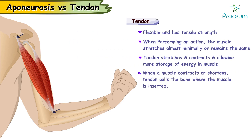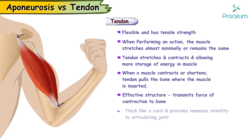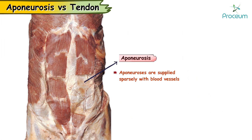When a muscle contracts or shortens, the tendon which is present pulls the bone where the muscle is inserted, bringing about the desired movement. Tendon is thus the effective structure that transmits the force of contraction to the bone. Since a tendon is thick like a cord, it provides immense stability to the articulating joint. Epineurosis are supplied sparsely with blood vessels.